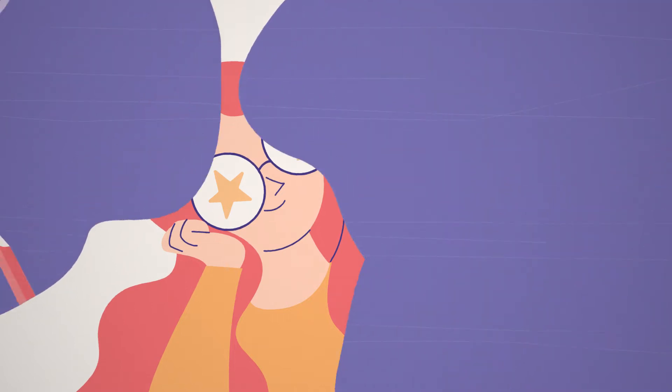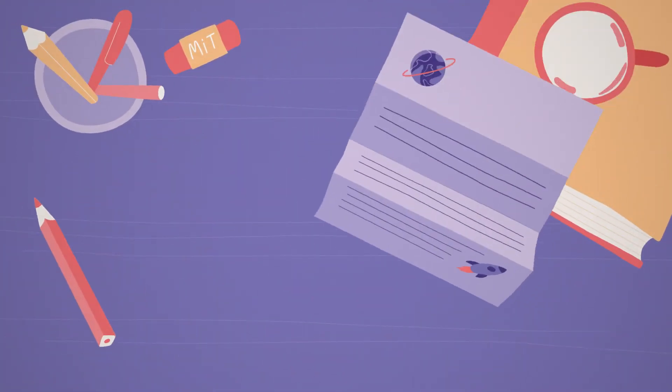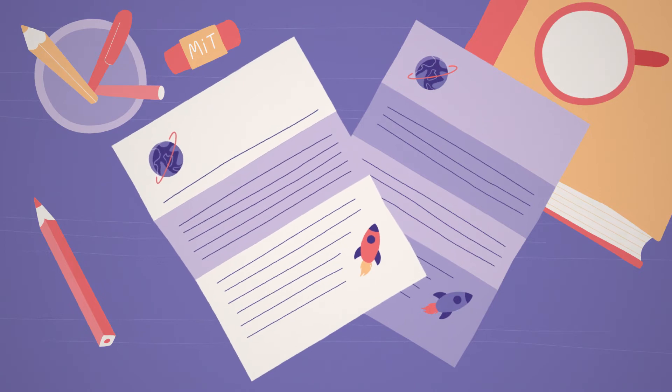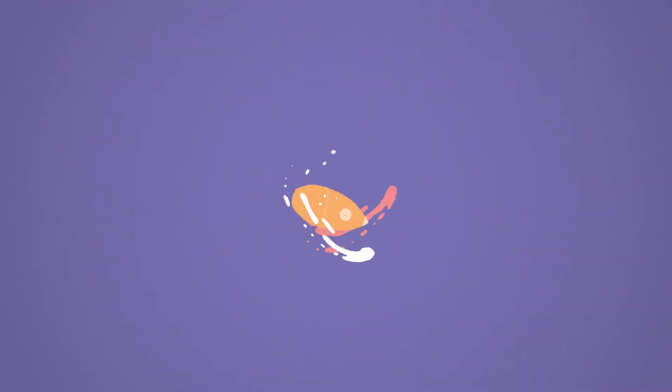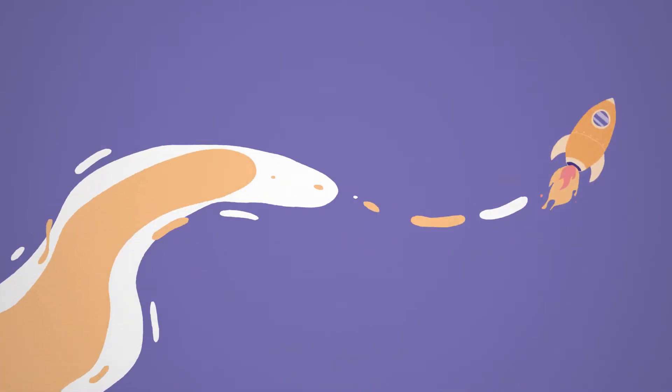Later, when she was working at MIT, Margaret was offered two jobs for NASA. She told them to flip a coin to decide. Either way, she would be working for the space program.